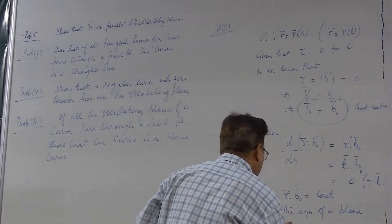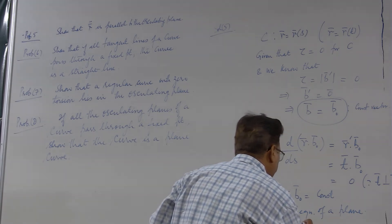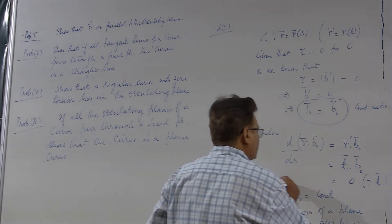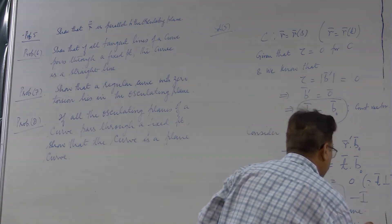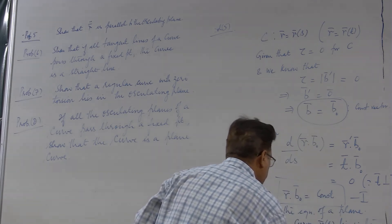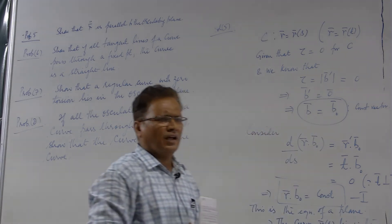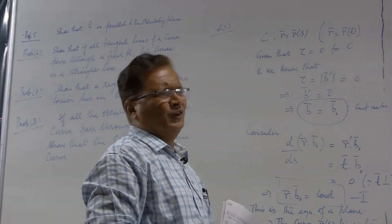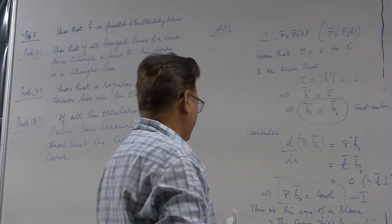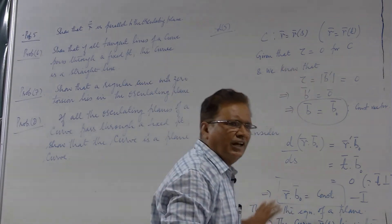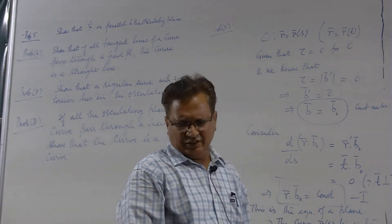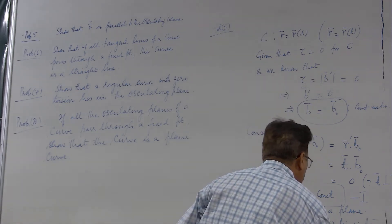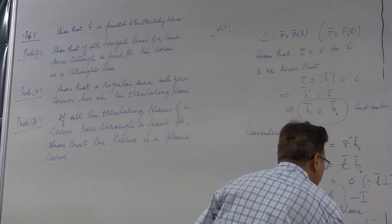So r is the position vector of an arbitrary point of a plane whose normal is b₀. But since r is already a curve, every point of r lies in this plane — so the curve lies in this plane. If you recollect, the binormal is orthogonal to the osculating plane, so this plane is in fact the osculating plane.